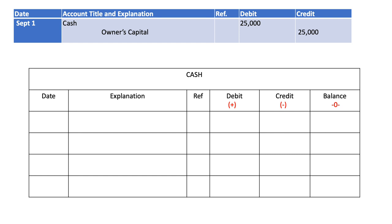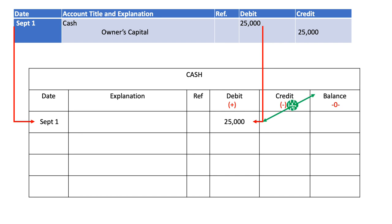In the first journal entry we have debit cash and credit owner's capital. Since I'm posting only to cash, I care only about cash. I have debit cash in this journal entry, so I post it to the ledger: I put the date, add $25,000 to the debit side, add $25,000 to the opening balance of zero, and get a new balance of $25,000.